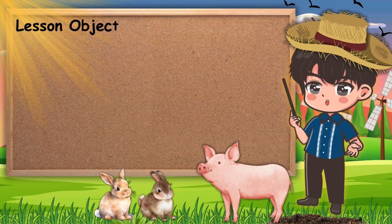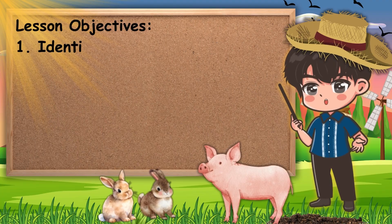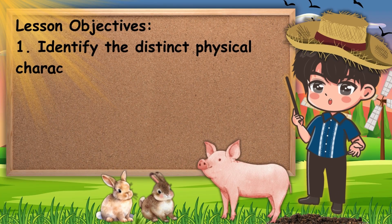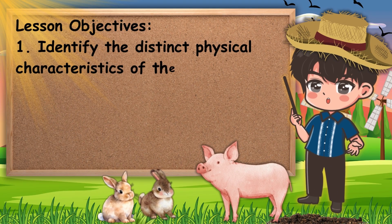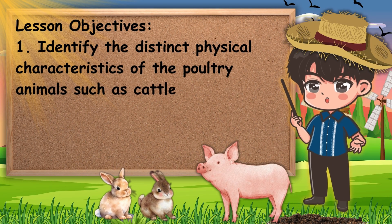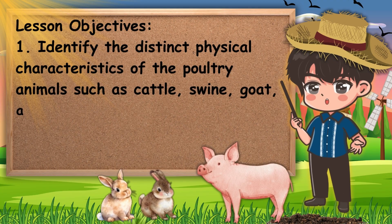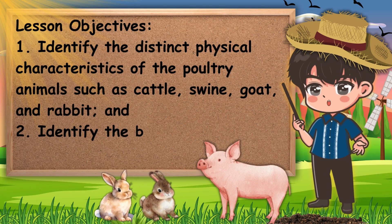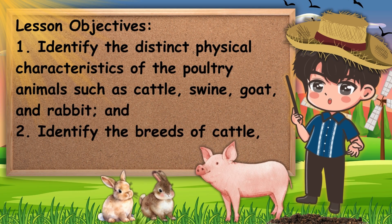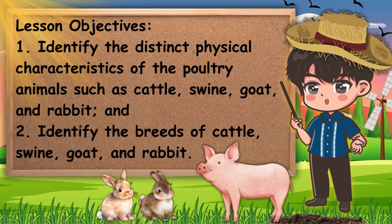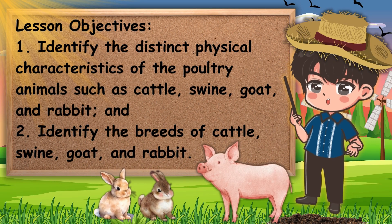This week we are going to: 1. Identify the distinct physical characteristics of the poultry animals such as cattle, swine, goat, and rabbit. 2. Identify the breeds of cattle, swine, goat, and rabbit.